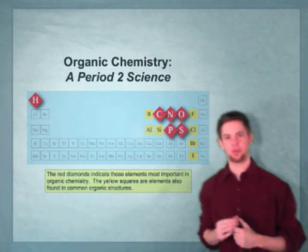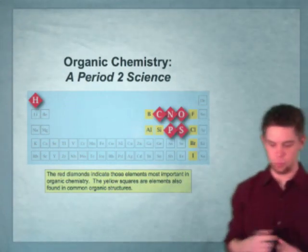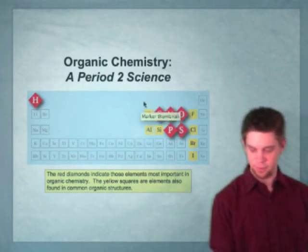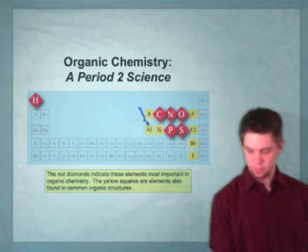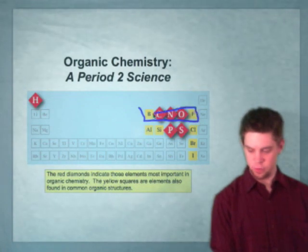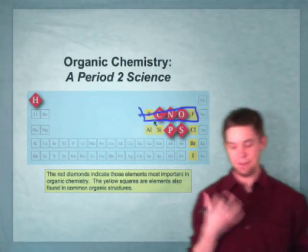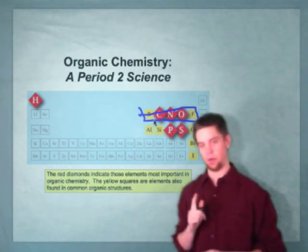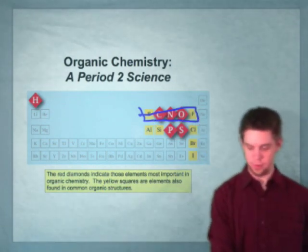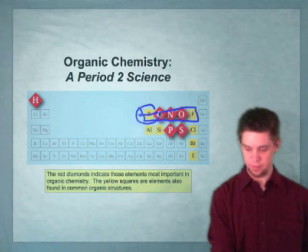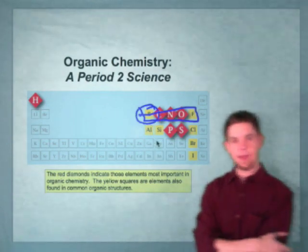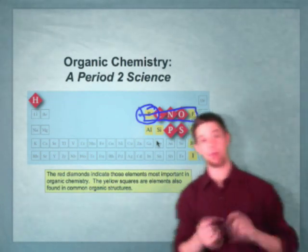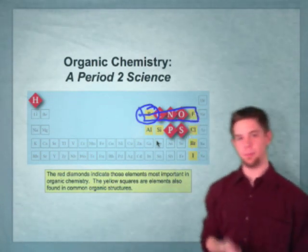Organic chemistry is a period 2 science. What does this mean? It means that we deal with elements that are on the second period predominantly — the second row of the periodic table. That encompasses five major elements we'll see used again and again. The first is boron, which is to the left of carbon and has a valence of three. Moving to the right, we have carbon, nitrogen, and oxygen — the big three.